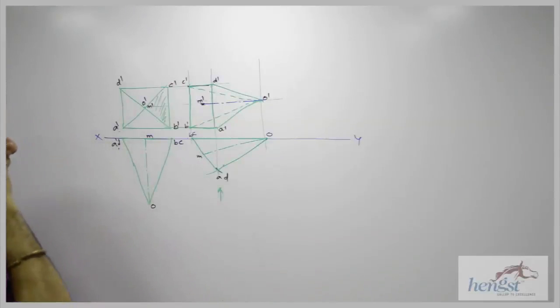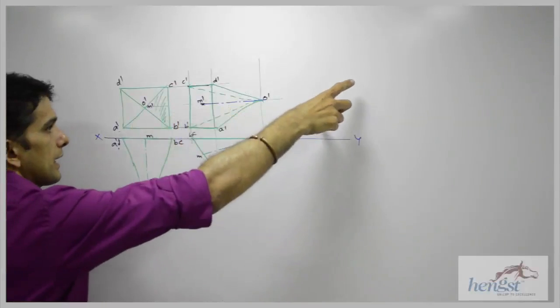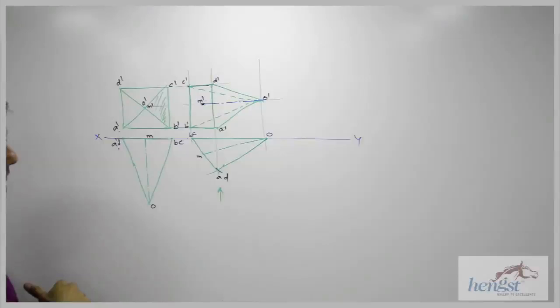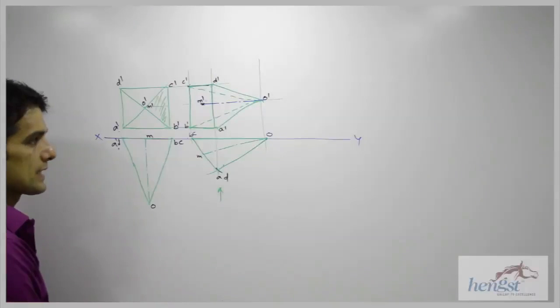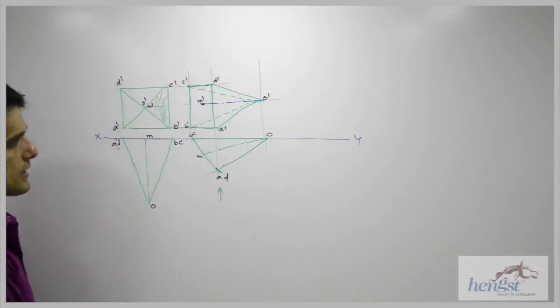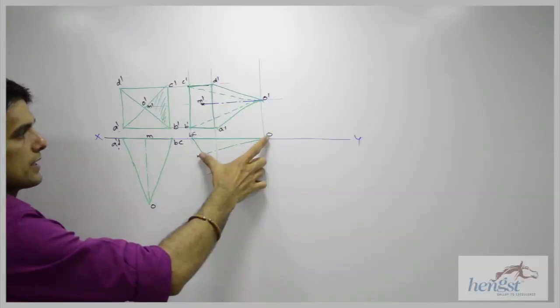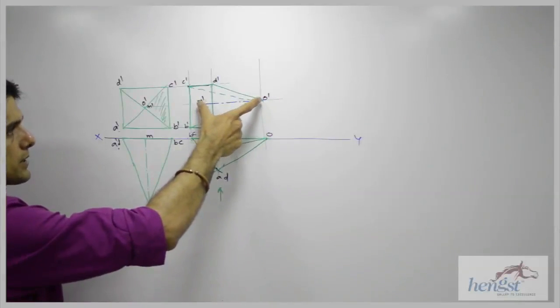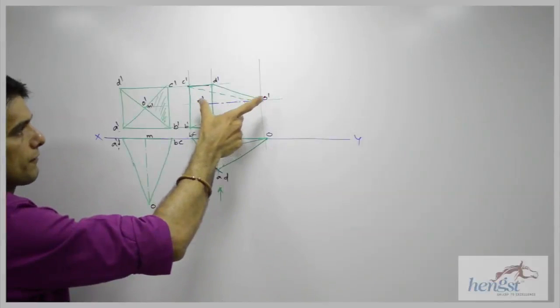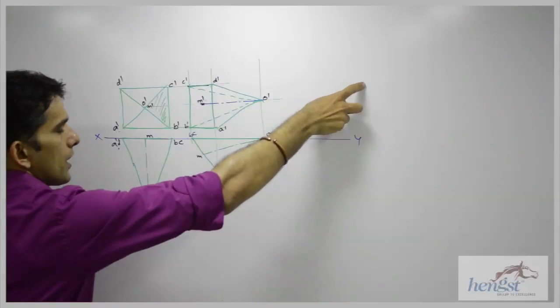Now they have said that front view of the axis is inclined. Now see, there is one important term. When they say axis is inclined and front view of the axis is inclined. So when they say axis is inclined, that means this. When they say front view of the axis is inclined, that means this. So they have said that front view of the axis is inclined at 30 degree.